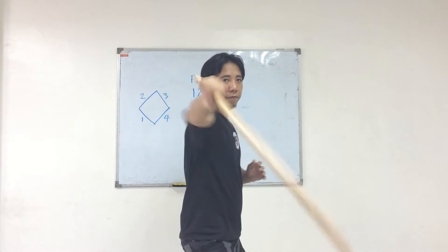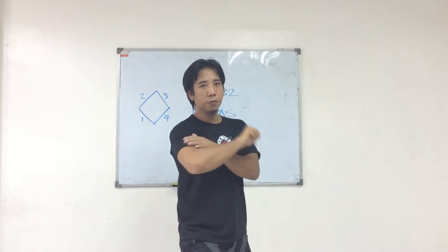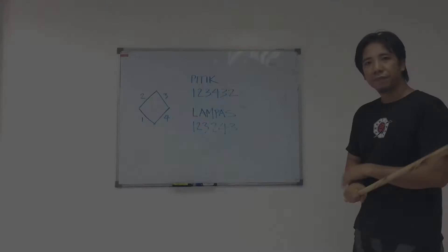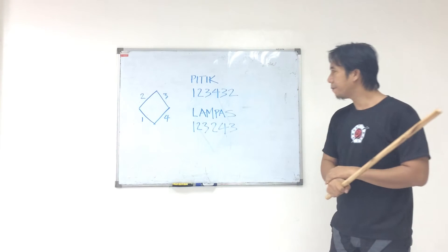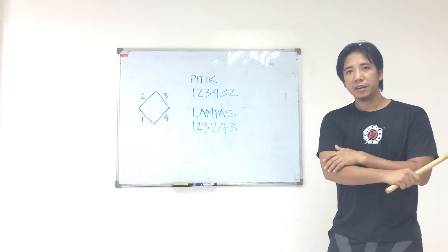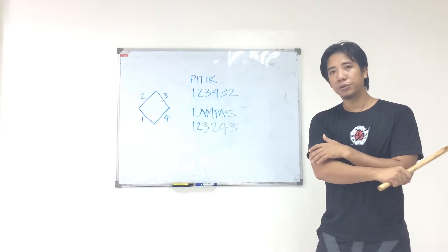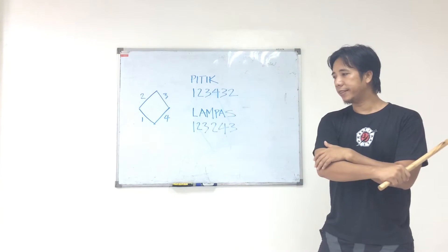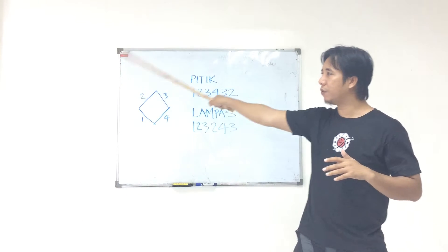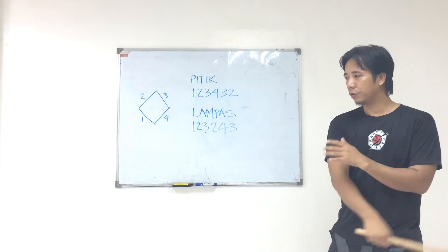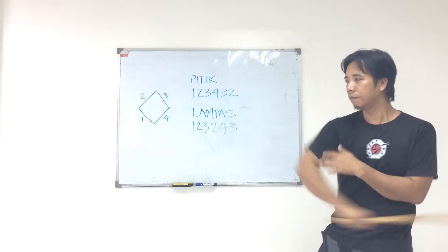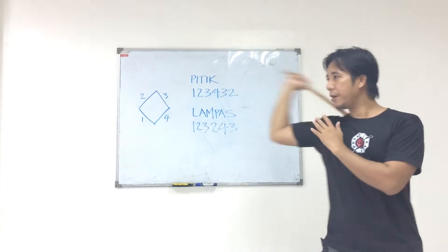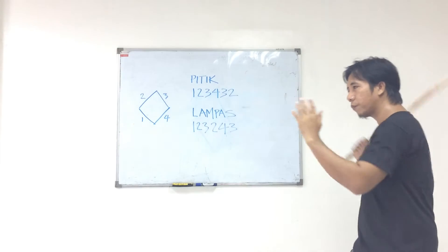When I'm facing you, it looks like this: one, two, three, four. Now that's the pitik. The lampas is a strike that is a full swing — so when I do a lampas, you hit the target and then follow through.